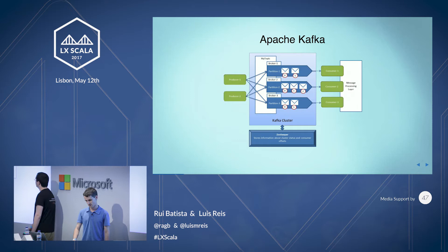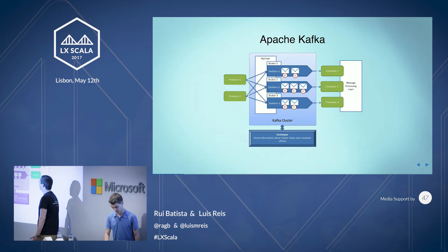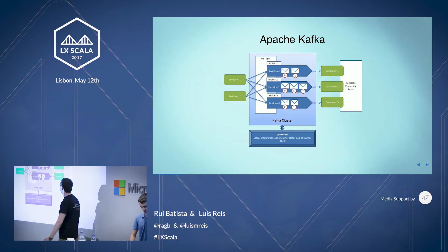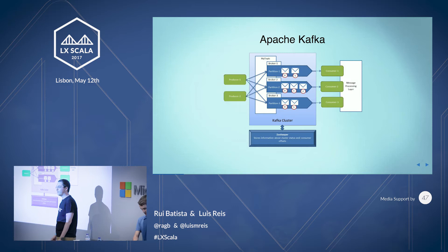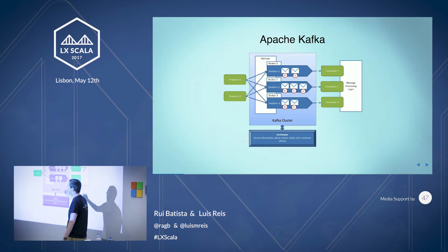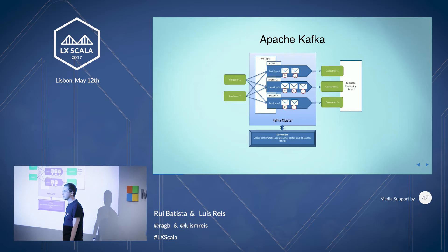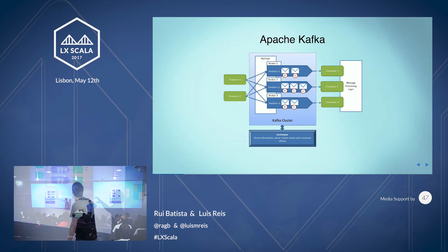But we have some subtle differences. First of all, our topics are partitioned. A topic is composed of N partitions and it is also composed of an optional key. If you pass a key to Kafka, it works like a distributed hash set. Let's suppose you have values 0 to 10 for your keys. The first partition would handle keys from 0 to 3, the second one from 4 to 7, and so on. If you don't pass a key to Kafka, it works like round robin.